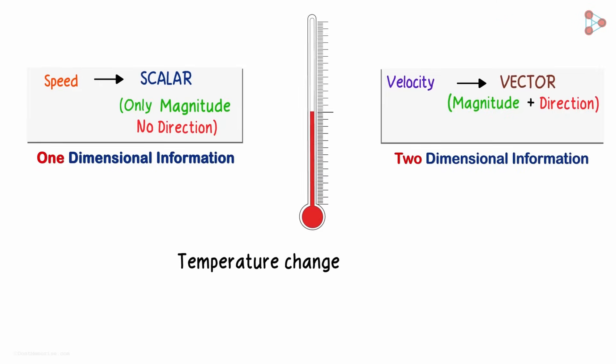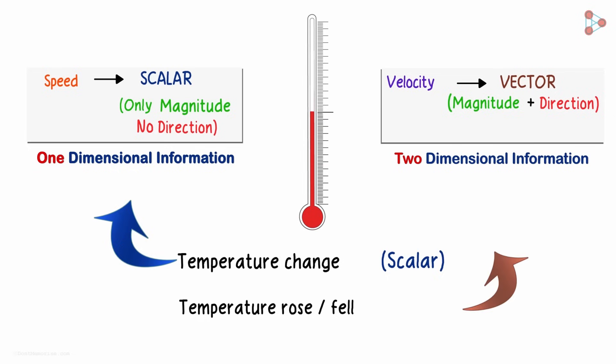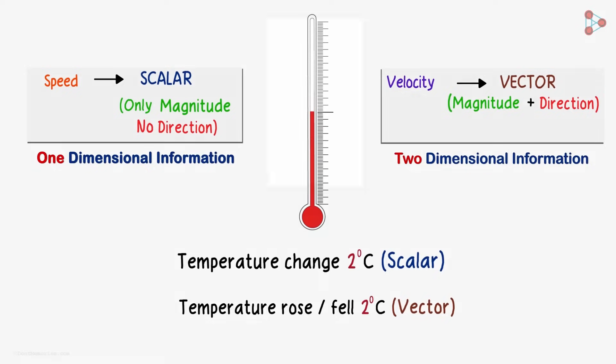Temperature change for example is one-dimensional quantity. But when we specify rising or falling temperature, it is two-dimensional. If someone says that the temperature has changed by two degrees, we won't really know if it has increased or decreased.